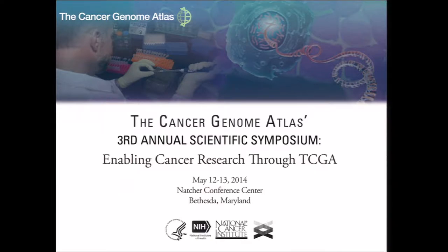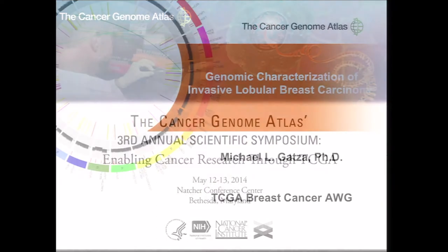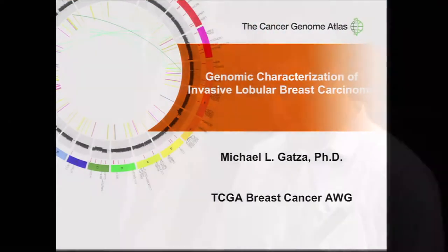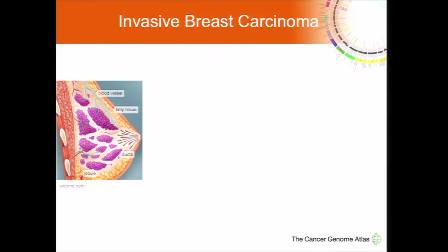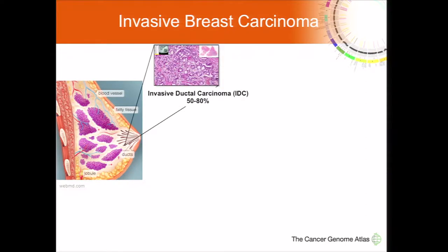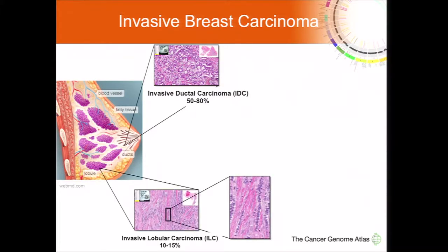Today, I'll present the genomic characterization of invasive lobular breast cancer on behalf of the TCGA Breast Cancer Analysis Working Group. Breast cancer is the most commonly diagnosed malignancy in women with about 230,000 cases a year. There are two prominent forms: invasive ductal carcinoma, derived from the ducts, accounting for 50 to 80 percent of all cases, and invasive lobular carcinoma, which arises from the lobule and accounts for 10 to 15 percent of cases, or about 25 to 30,000 cases a year.